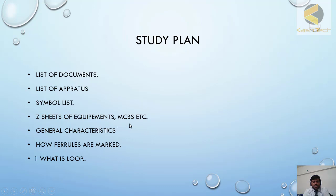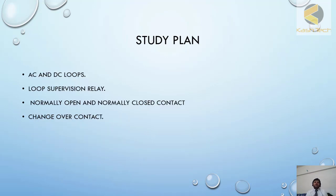In the Z sheet, I have shown how you can track different equipment and check the full detail of each item. I have explained general characteristics — very interesting information you can find there — and how ferrules are marked, which is also very important. Another topic covered is what a loop is. Loop, in protection engineering, is a special terminology that you should know. I have further explained AC and DC loops, and then loop supervision.